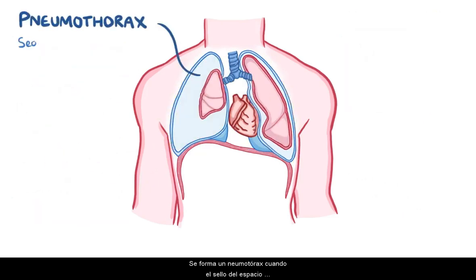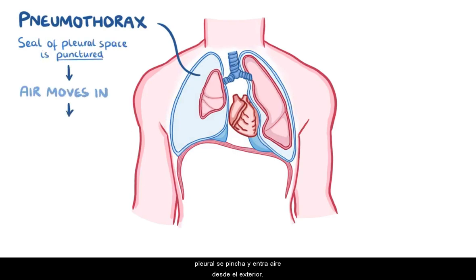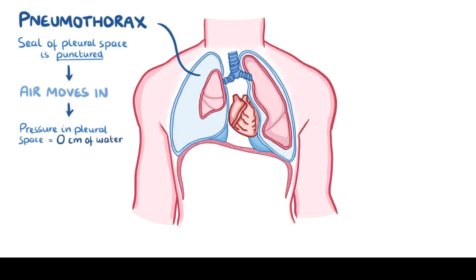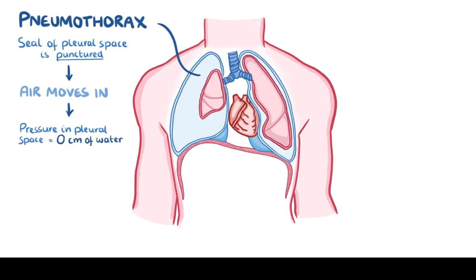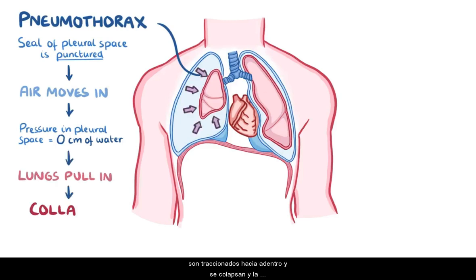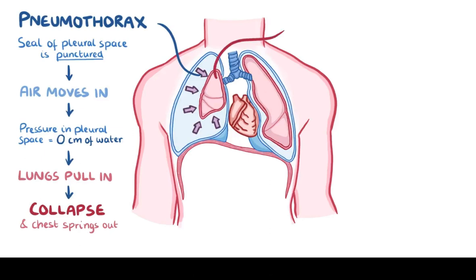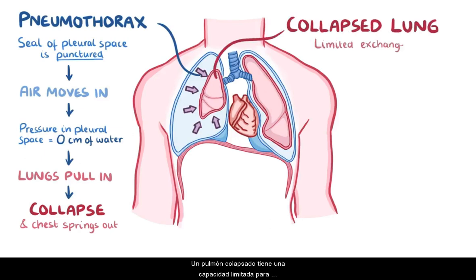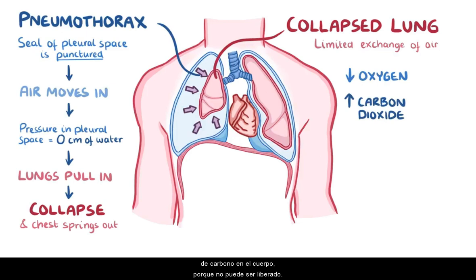A pneumothorax forms when the seal of the pleural space is punctured and air moves in from the outside, making the pressure in the pleural space equalise to 0 cm of water. Since the negative pleural pressure is lost, the two opposing forces no longer pull on one another. As a result, the lungs simply pull inwards and collapse, and the chest wall simply springs outwards a bit. A collapsed lung limits how well it can exchange air, and can lead to a reduction in oxygen being brought into the body and a build-up of carbon dioxide.